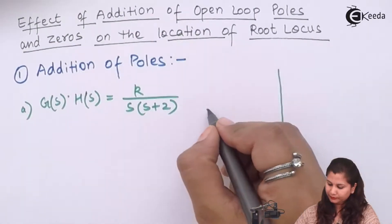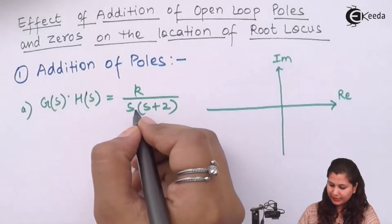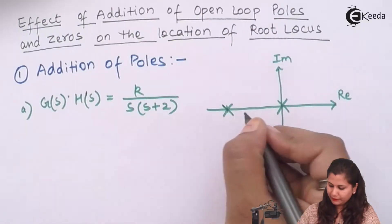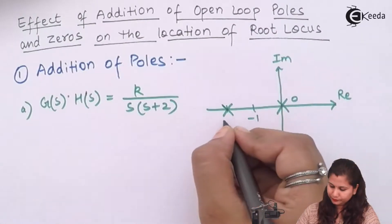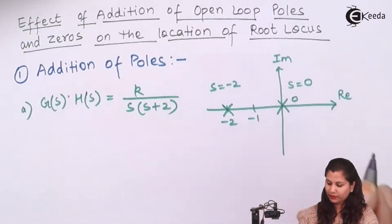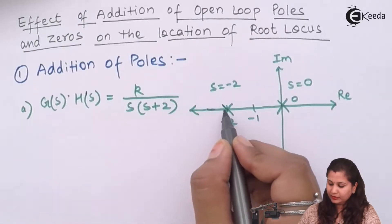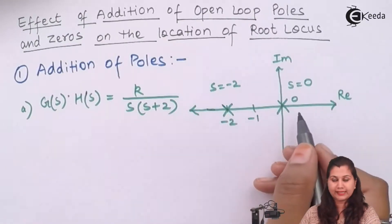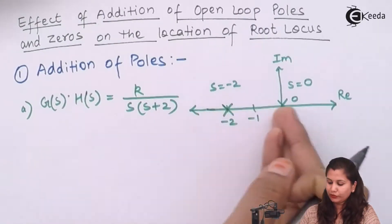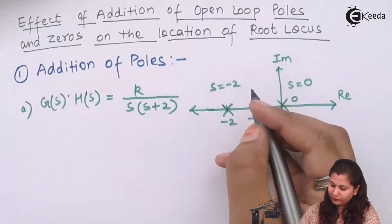We will see its direction. This is the imaginary axis and this is the real axis. So first we will have s equals to 0 as one of our poles, and the second pole is s equals to minus 2. So this is minus 2, minus 1, 0 — s equals to minus 2 and s equals to 0 are our two poles. Now we will see what will be the root locus for this. If we take a point here, the number of poles on the right hand side is two, so the direction of root locus for the pole s equals to minus 2 will be towards the zero, that is towards the origin.